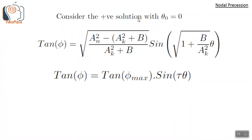Considering only the positive solution and setting θ₀ = 0, we get the expression which can be written in the simpler form: tan φ = tan φ_max × sin(τθ). We can note there is a difference in φ_max estimation — that is, the estimation of the northernmost and southernmost positions in the trajectory — depending on whether b is zero or non-zero. The value of φ_max changes in the two cases.